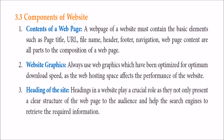What are the components of a website? A website has web pages or is a combination of web pages. A web page of a website should contain basic elements like the page title, the URL, the file name, the header, footer, navigation, and web page content. These are all parts of the composition of a web page.